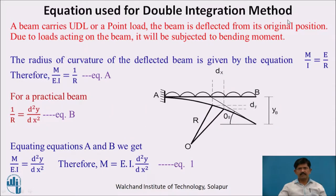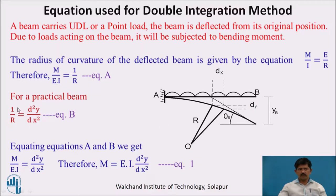How does the equation of the double integration method come about? If we see the deflected shape of the beam, it has a curvature with some point of origin and a radius. The curvature of the deflected beam is given by the flexural equation: M/I = E/R, therefore M/EI = 1/R (equation A). For a practical beam, 1/R is denoted by d²y/dx². Equating A and B, we get M/EI = d²y/dx², therefore M = EI·d²y/dx² (equation 1).